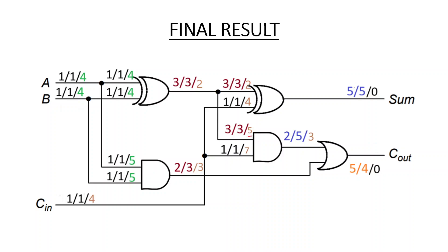For an AND gate input observability, we calculate: observability of output (which is 3) plus one-controllability of the other input (which is 1), plus one for the logic gate, giving 3+1+1=5. For the other AND gate input, observability of output (3) plus one-controllability of the other input (3), plus one, giving 3+3+1=7.